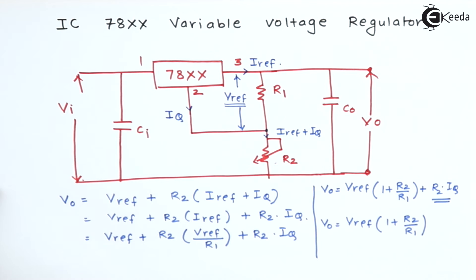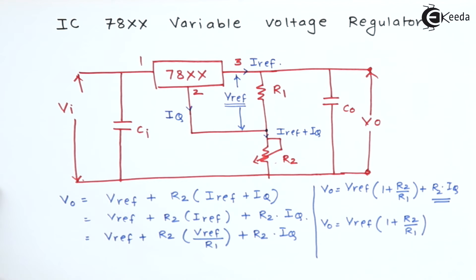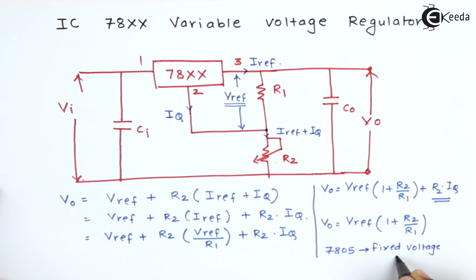From the output voltage, we can say the value of IC78XX variable voltage regulator is always more than the reference value. With 7805, the value of fixed voltage is always 5 volt.